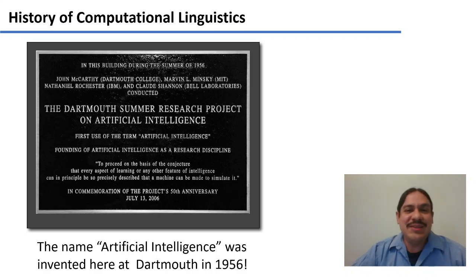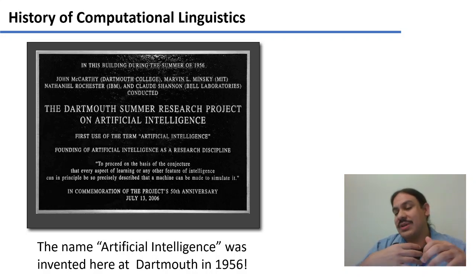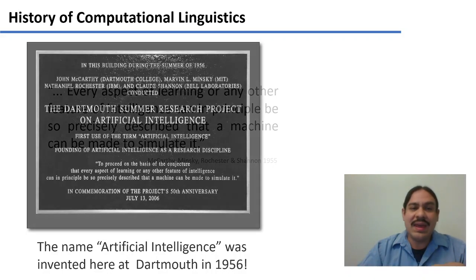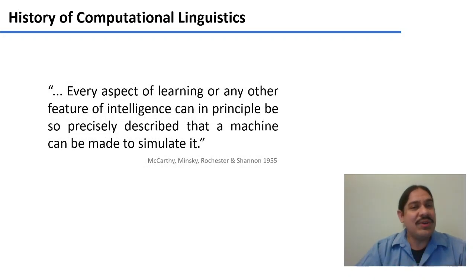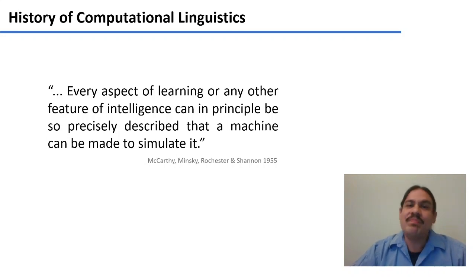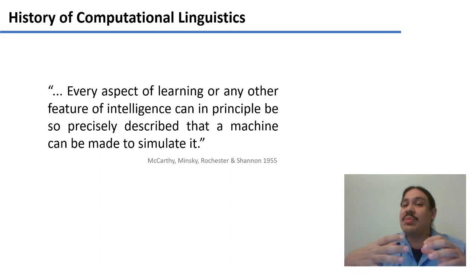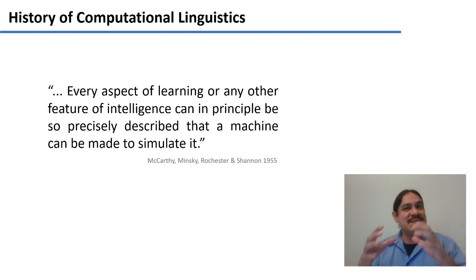There was a meeting in 1956 where a group of researchers were trying to figure out what it would mean for a computer to think and how you could get a computer to demonstrate intelligence. They believed that every aspect of learning, or any other feature of intelligence, can in principle be so precisely described that a machine can be made to simulate it. Notice the optimism in this phrase — this kind of optimism and belief that computers could model any problem fairly easily was a hallmark of this first stage in AI research in the 1950s and 60s.